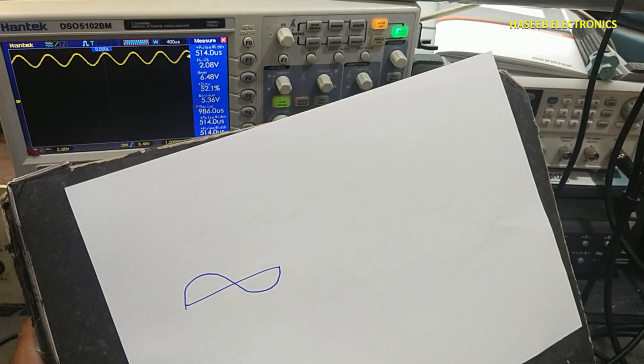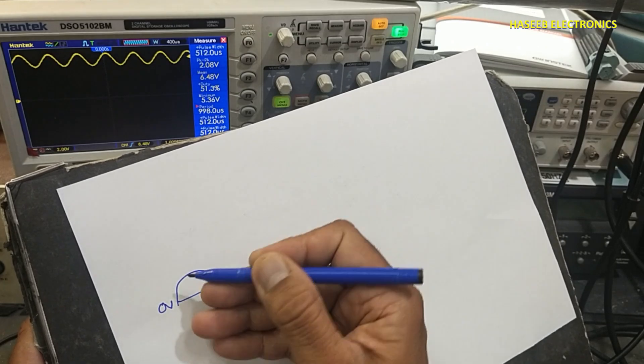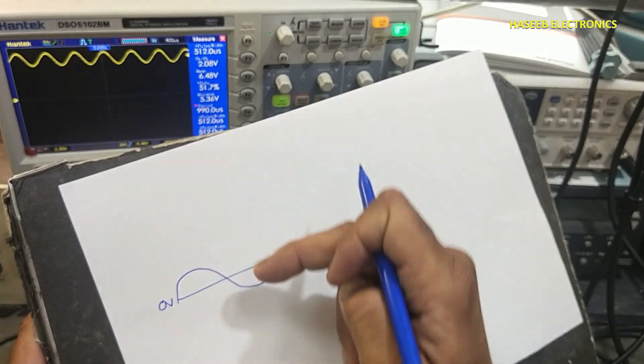This is the actual signal: zero volt, half peak in upside, half peak in downside.